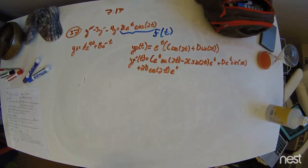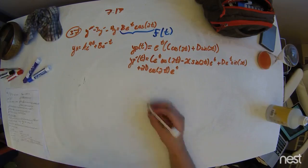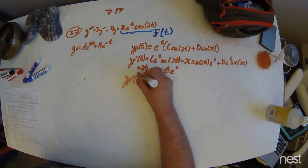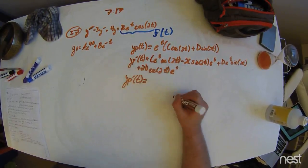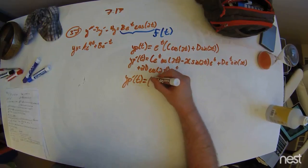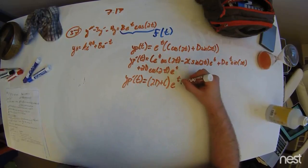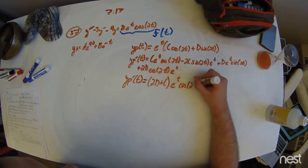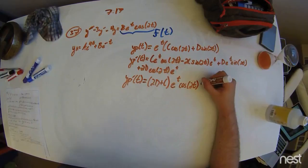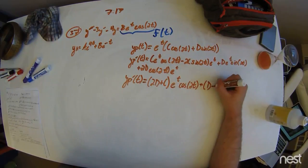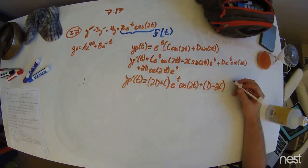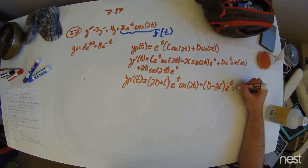The second derivative can be found easier by grouping all these like terms together. So y prime particular equals 2d plus c times e to the t times cosine of 2t plus d minus 2c times e to the t times sine of 2t.